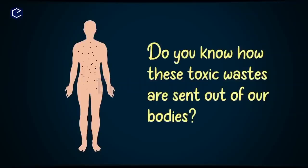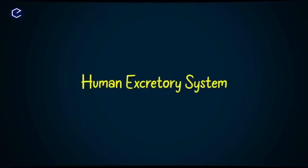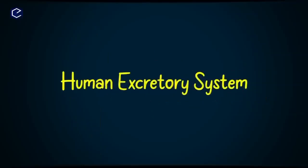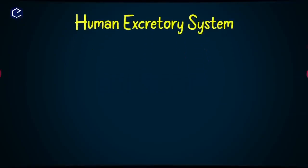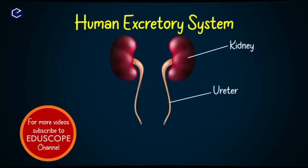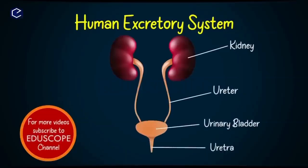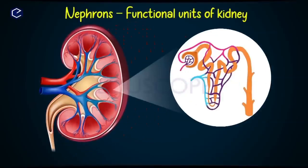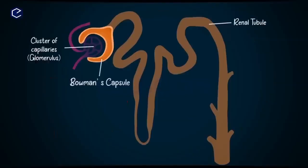Blood collects and carries these toxic materials to the excretory system for filtration. The human excretory system has two kidneys, two ureters, one urinary bladder, and one urethra. Nephrons are the structural and functional units of the kidney — these are the tiny structures that filter the blood. Each nephron has a tuft of capillaries called the glomerulus and a cup-like structure called Bowman's capsule.